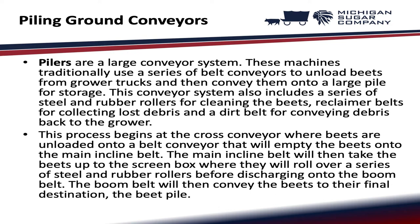Pilers are a large conveyor system. These machines traditionally use a series of belt conveyors to unload beets from growers' trucks and then convey them onto a large pile for storage. This process begins at the cross conveyor, where beets are unloaded onto a belt conveyor that will empty the beets onto the main incline belt. The main incline belt will then take the beets up to the screen box, where they will roll over a series of steel and rubber rollers before discharging onto the boom belt. The boom belt will then convey the beets to their final destination, the beet pile.